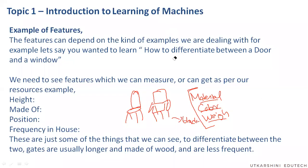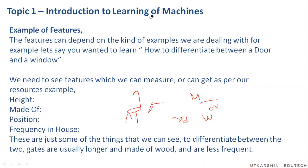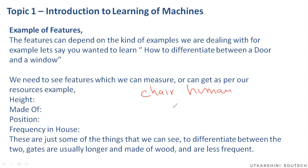If I ask you to differentiate between a chair and a human, I can easily differentiate. A chair has features like four legs; humans have two legs. Chairs are usually three or four feet tall; humans are mostly five to seven feet tall.